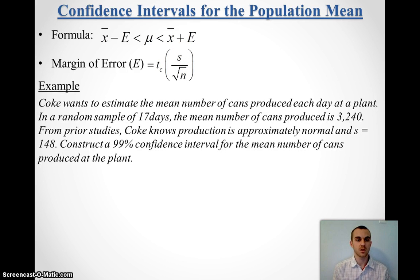So, let's look at an example. Coke wants to estimate the mean number of cans it's producing. It does a sample of 17 days and finds the average is about 3,240.